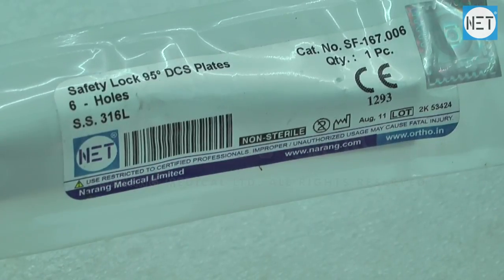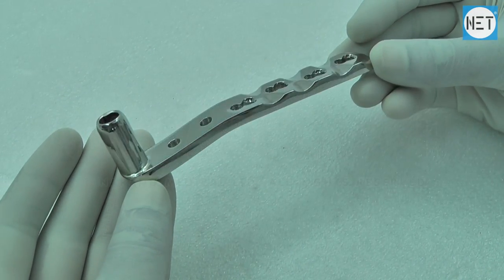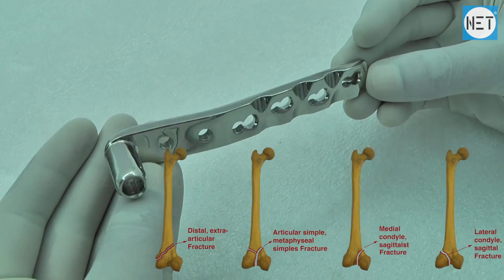Net brand 95 degree DCS Safety Lock Plates. These plates are indicated for all types of distal intercondylar fractures of the femur.